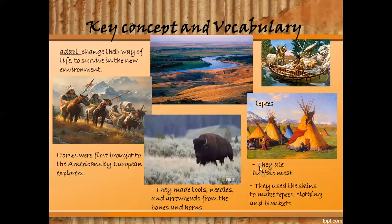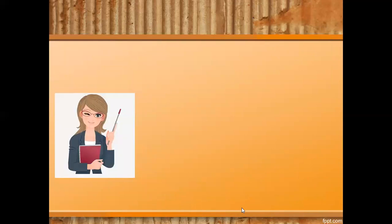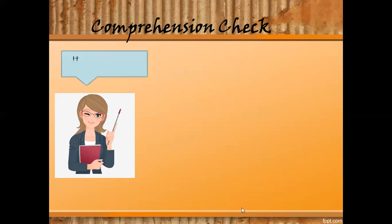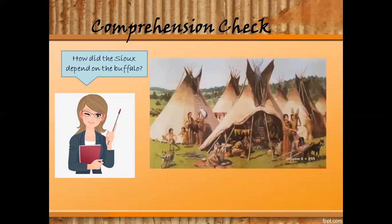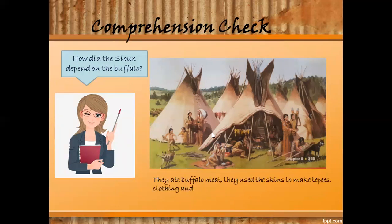I hope you will remember the importance of buffaloes to native people. Now let's have a comprehension check. How did the Sioux depend on the buffalo? Look at this picture — can you point out the items made from buffalo? This is a teepee, made from the skin of buffalo. They are also drying skins for use as clothing, or it could be dried meat. There are several reasons why the buffalo was very important to native people.